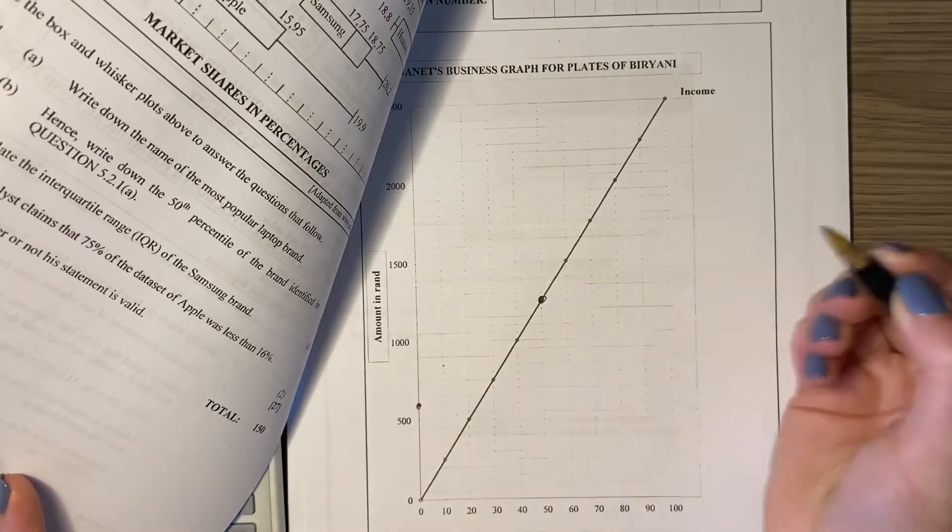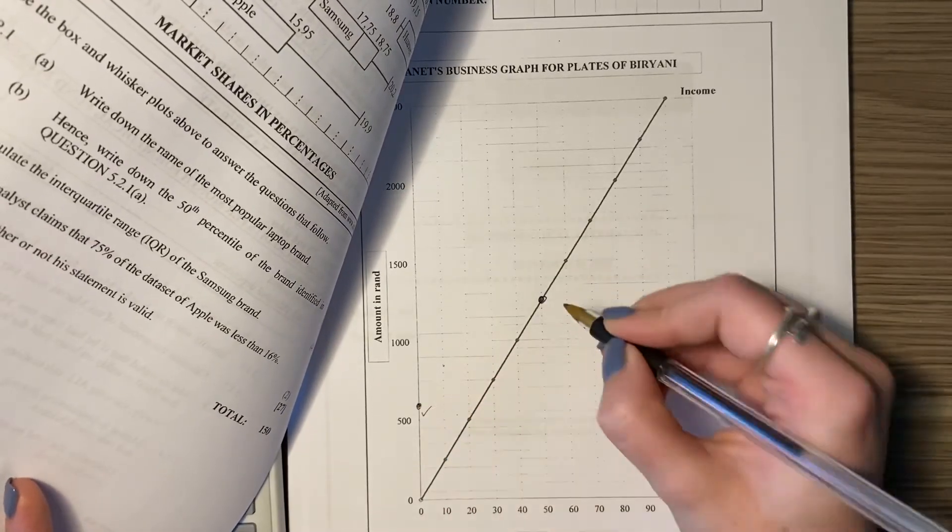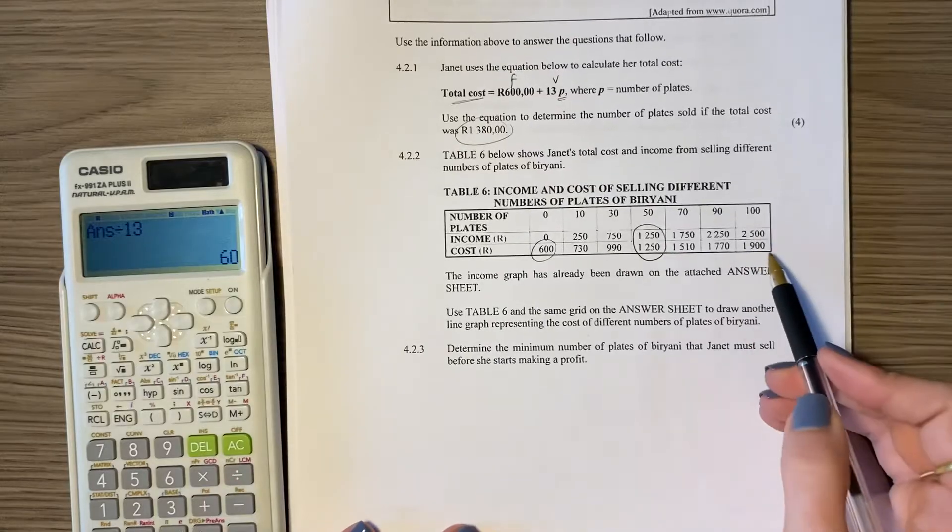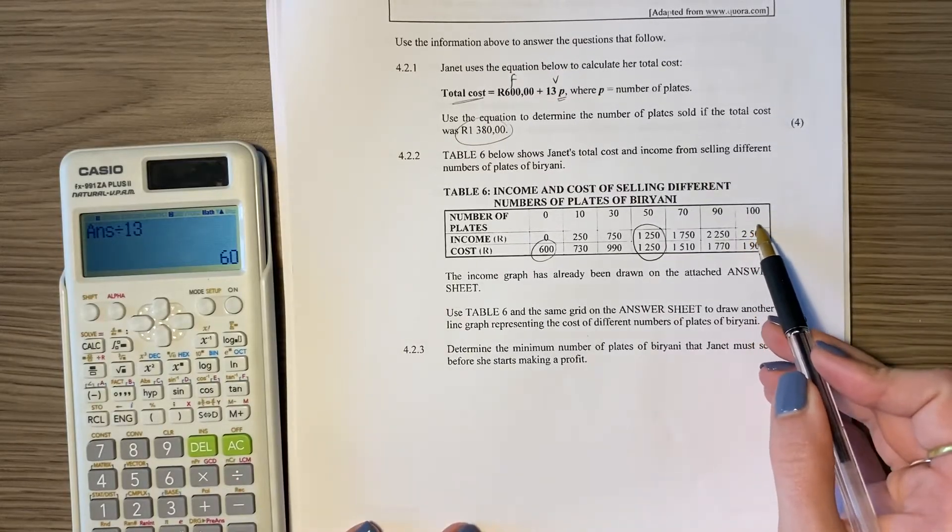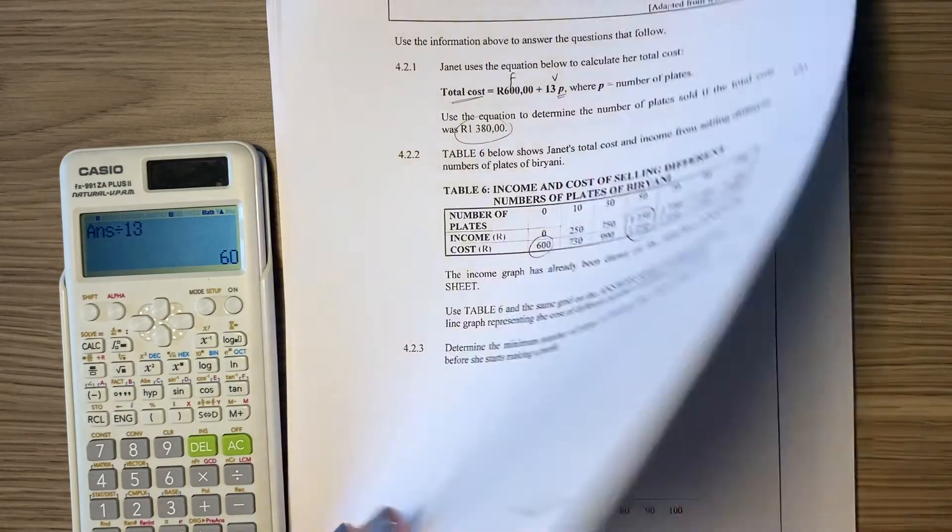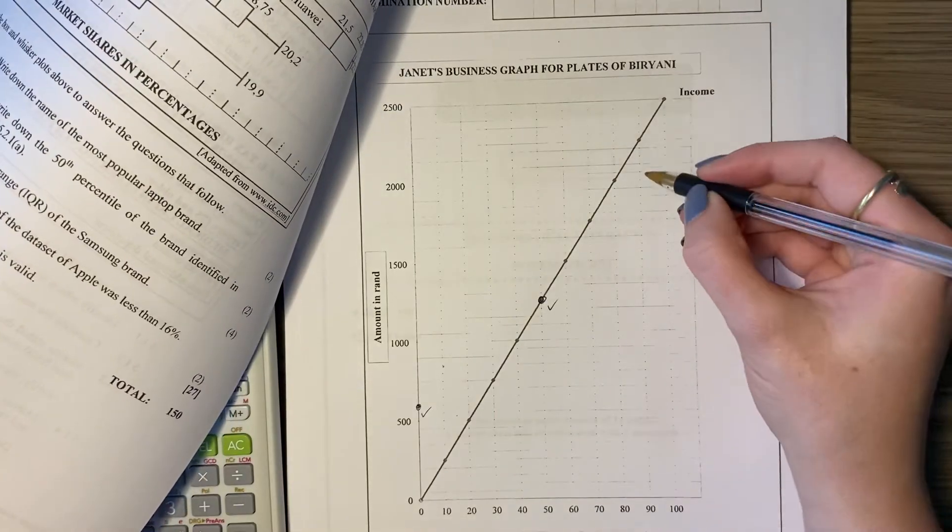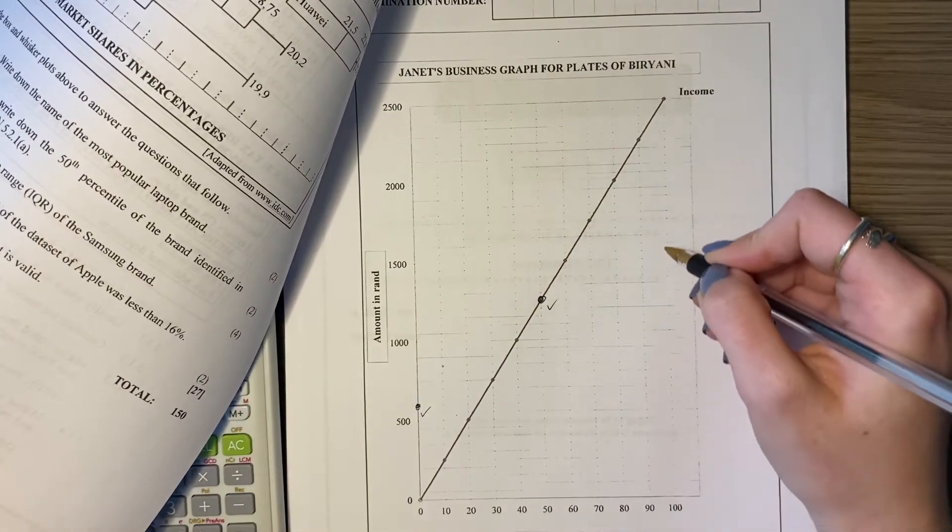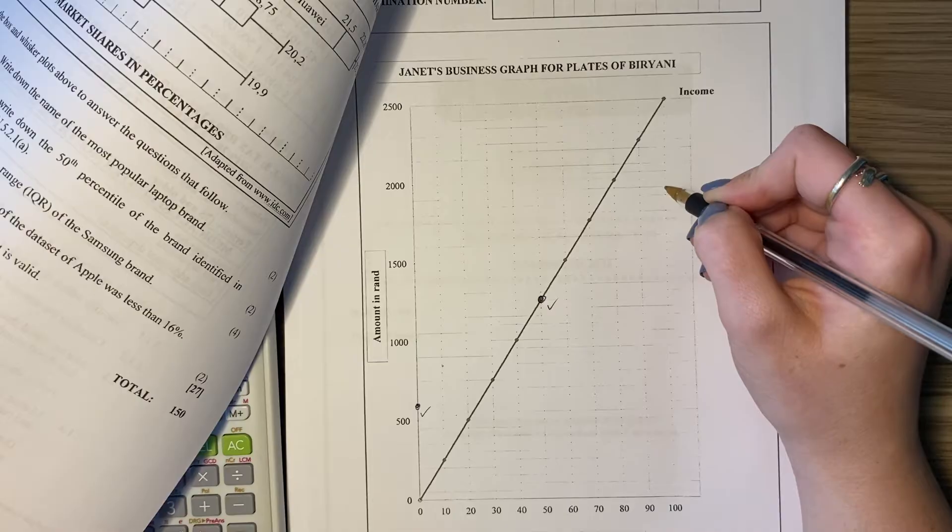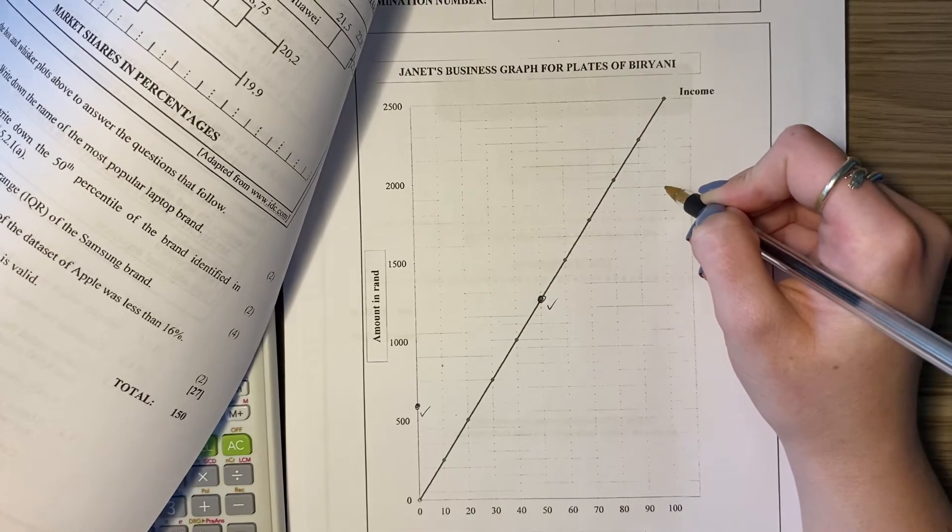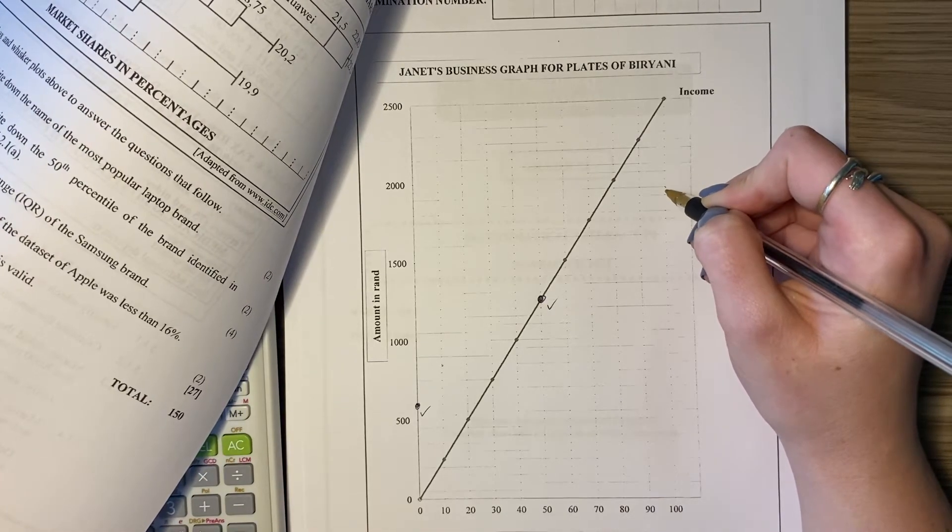So the biggest points they're going to mark is where it hits on the axis, where it hits the other graph, and then where it ends. So where it ends over here, it's 1900. So at 100 we're going to go up, 100 we're going to go up, and it will be sitting at about here.